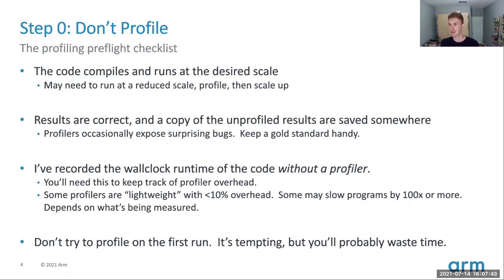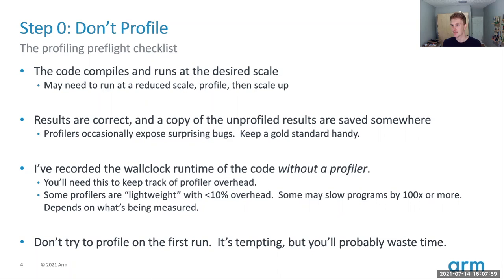Some profilers by design do slow down the application — many orders of magnitude, even 100x or 1000x — but those profilers are generating metrics not dependent on wall clock time, so the slowdown doesn't matter. MAP and the profilers I'll talk about today do describe your wall clock runtime in code regions, so if you see slowdowns greater than 10 percent on your wall clock there's a problem, and you need to know what an unprofiled run looks like first.